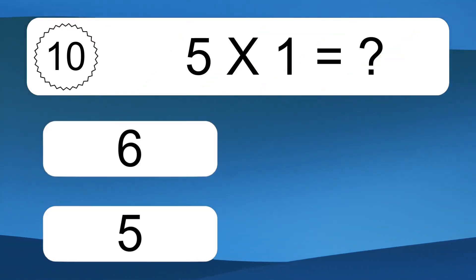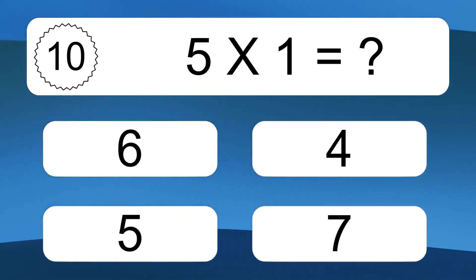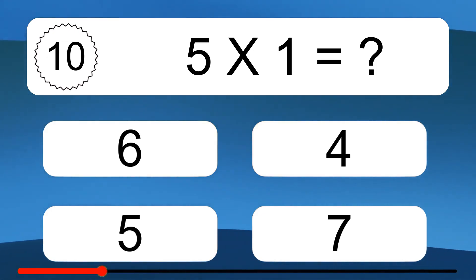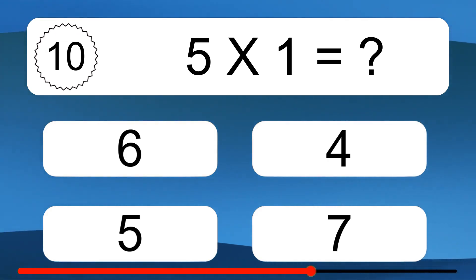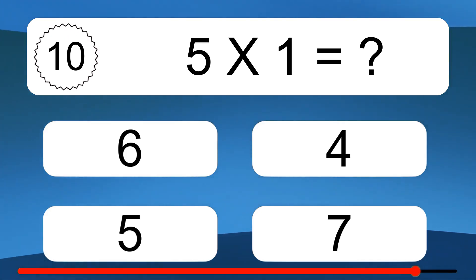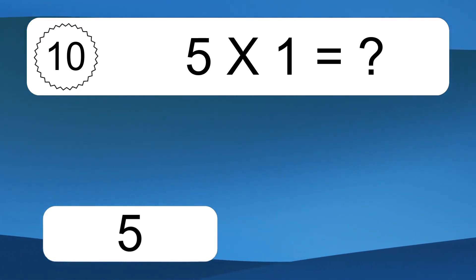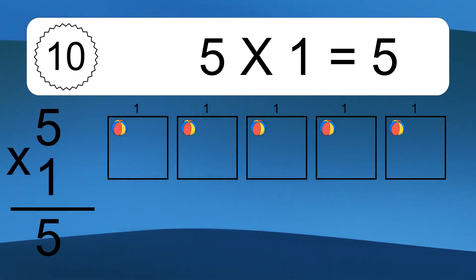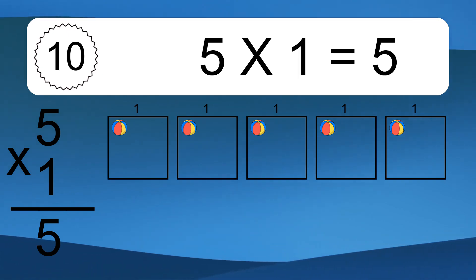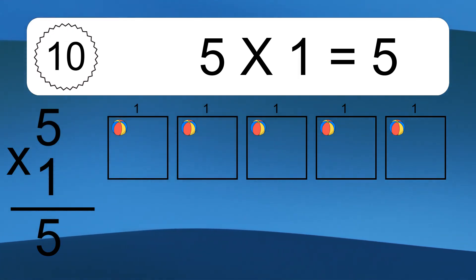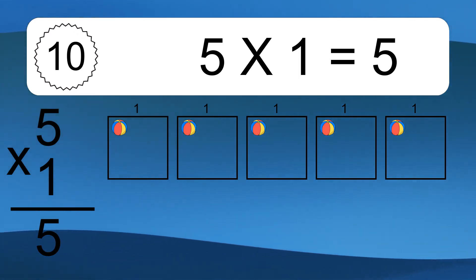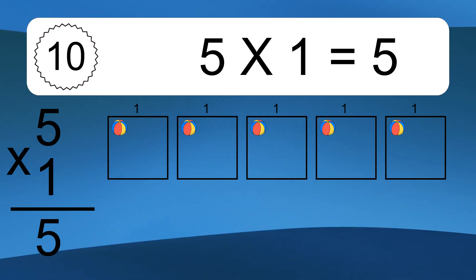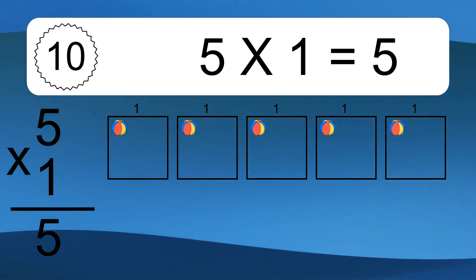5 times 1 equals what? 5 times 1 equals 5. We have 5 boxes, and each box has 1 colorful ball inside. If you count all the balls in all the boxes together, you will have 5 times 1 balls. This equals 5 balls.